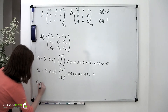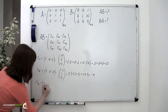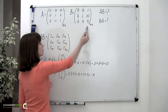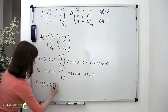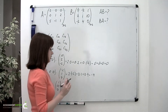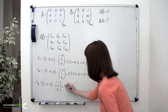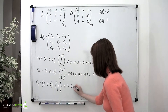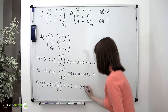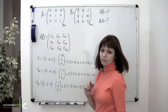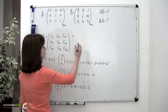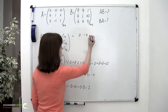Then C sub 1,3 equals the row 2, 0, 0 multiplied by the column 1, 10, 0. That is equal to 2 times 1 plus 0 times 10 plus 0 times 0, which is 2. So the first row of our product matrix is 0, negative 4, and 2.